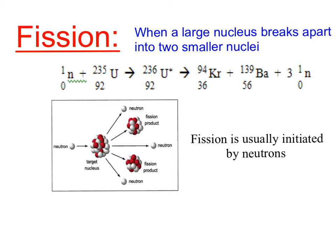Fission is generally initiated using a neutron. A neutron comes in, hits a stable nucleus, which turns it into an unstable nucleus, which then splits apart, releasing at least two smaller nuclei and a bunch of neutrons that can then go on and repeat this process with other unstable nuclei.